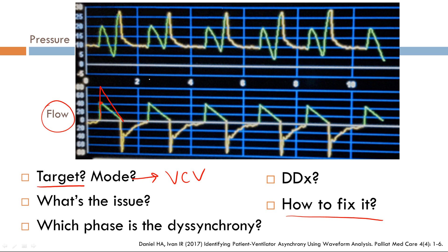The second scenario: if you increase the flow to 80 but the target dyssynchrony still persists, the other option is to make flow your dependent variable instead. That way the patient can take as much inspiratory flow as they want. Making pressure your independent variable means switching from volume control ventilation to pressure control ventilation — that's the second way of addressing target dyssynchrony.